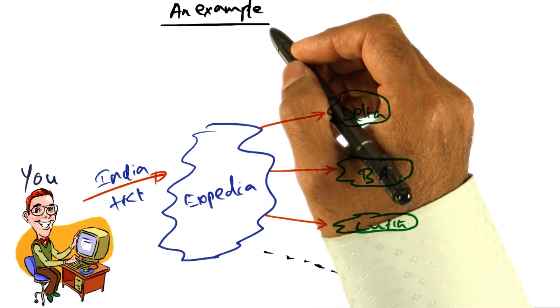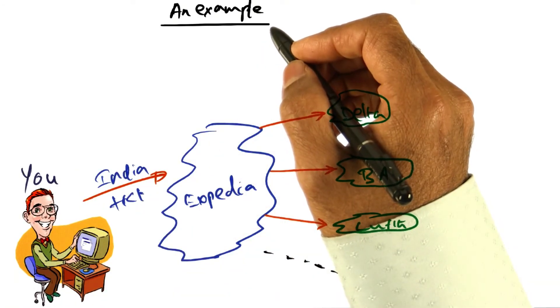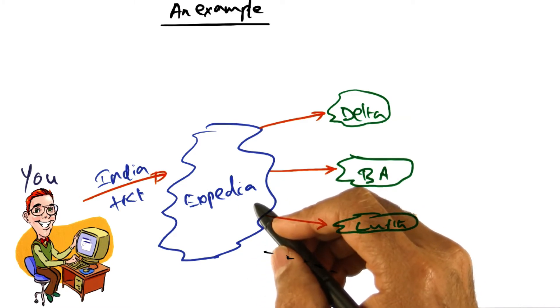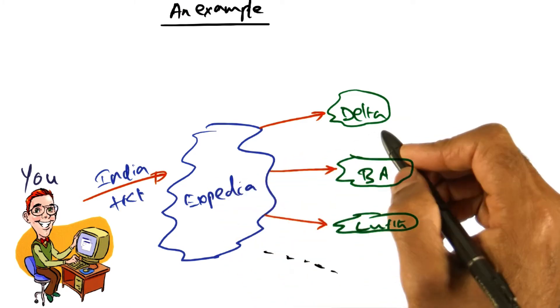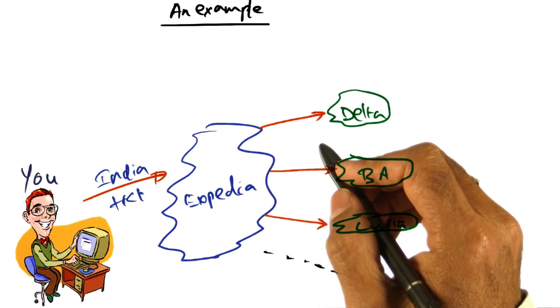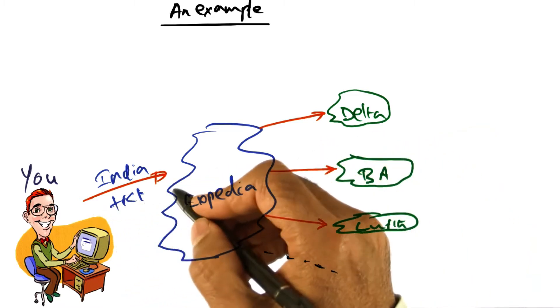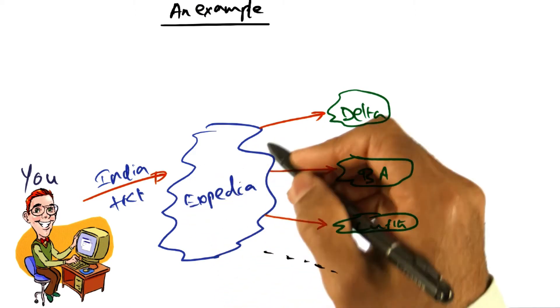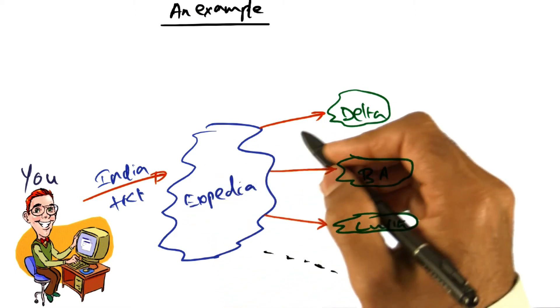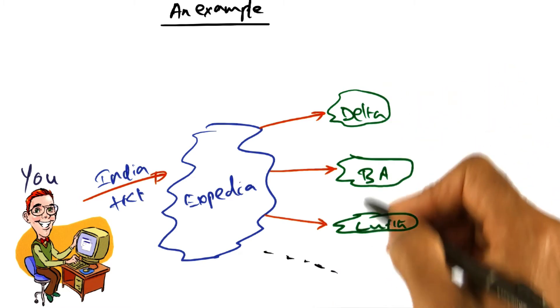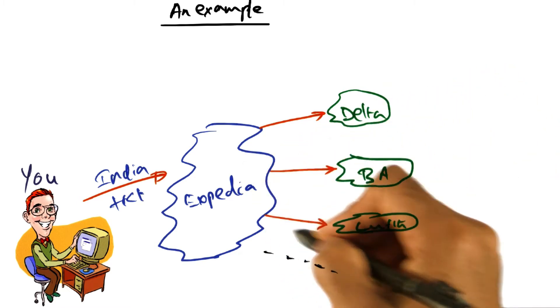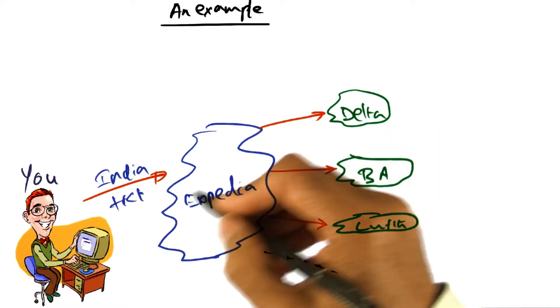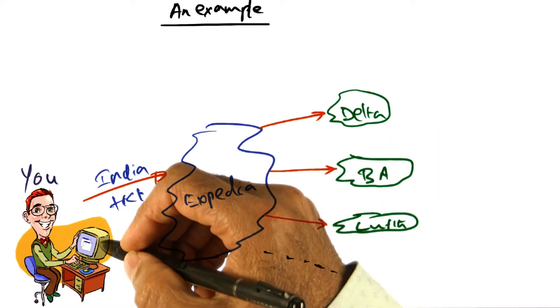Let's look at an example to put things in perspective. Let's say you want to purchase a round trip ticket to go from Atlanta to Chennai, India. With a few clicks, you can send your request over to a portal such as Expedia, and Expedia then goes to work for you. It contacts a whole bunch of different airlines, gets the best options that are available from all these different choices, and then comes back to you with a bunch of options.